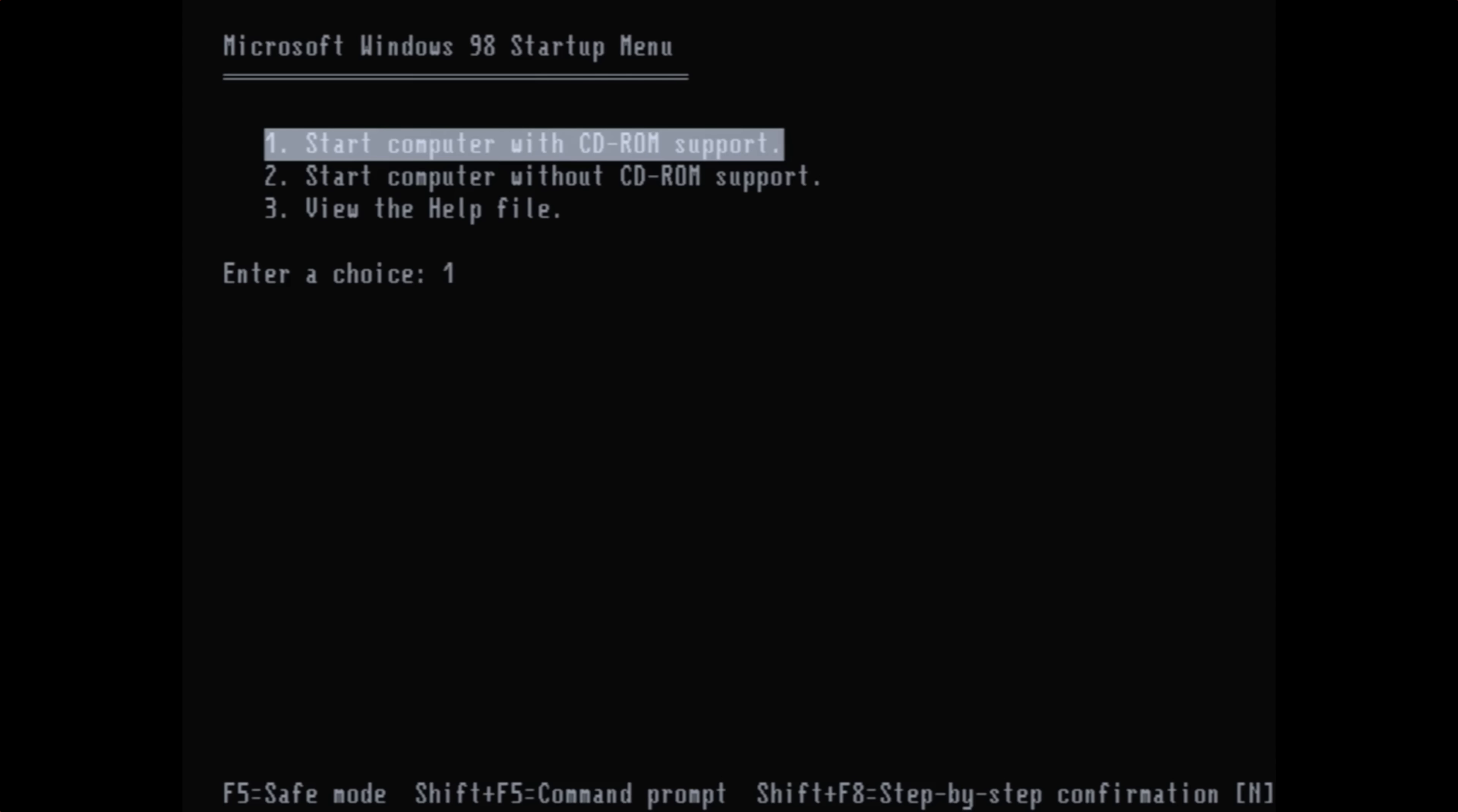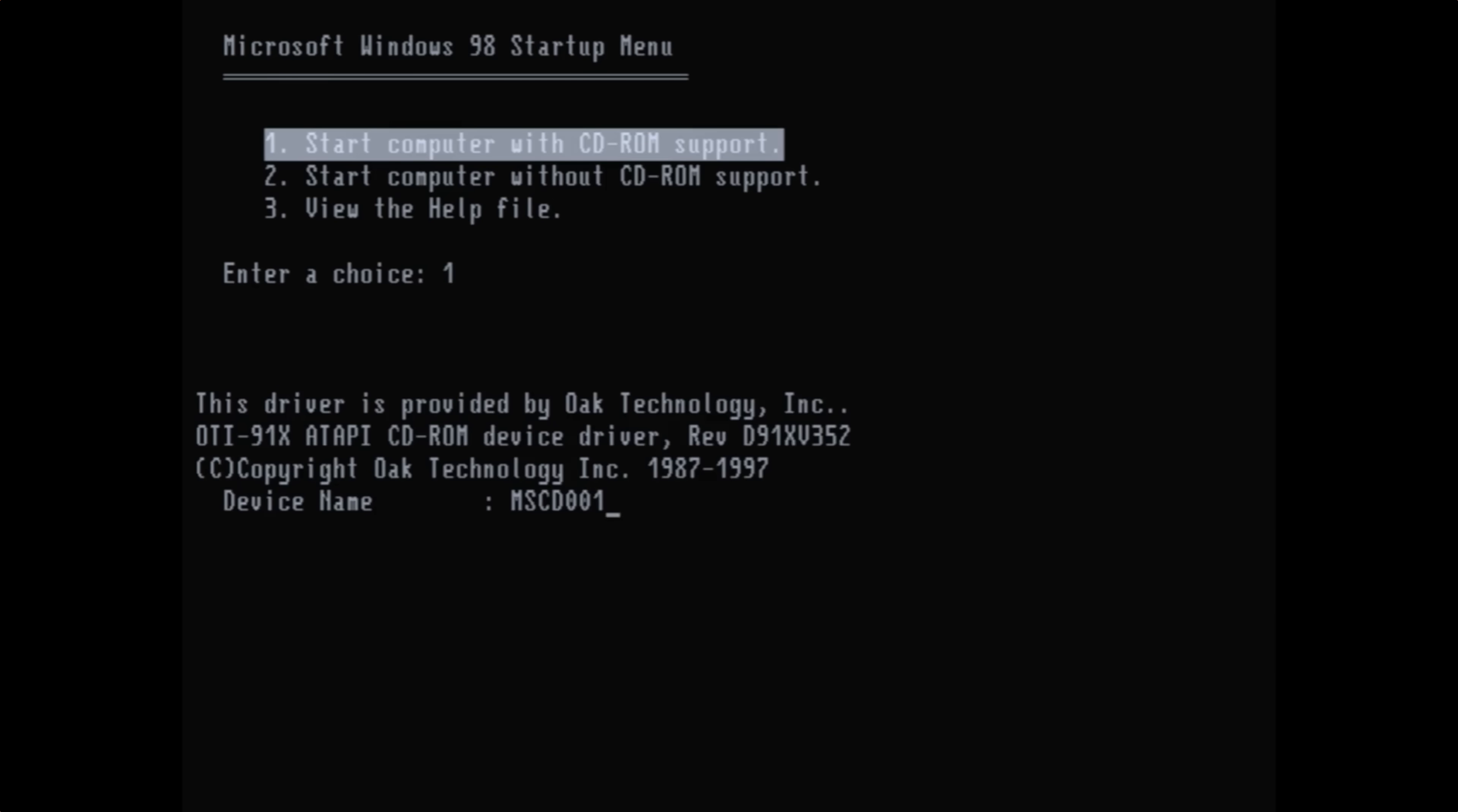You will of course need a boot floppy disk and a Windows 98 reinstall CD. It's up to you to obtain those. I've started here with the boot floppy, and I'm at this startup menu. I'm going to pick option one for start computer with CD-ROM support. Obviously, we need to copy the files off of the CD-ROM in order to reinstall Windows, so that will load the drivers that are necessary.